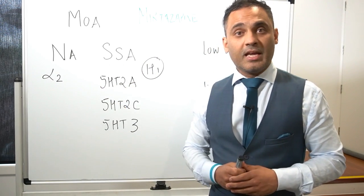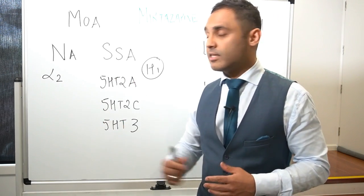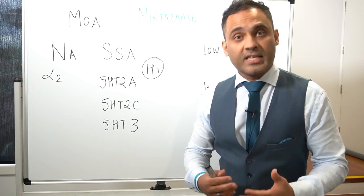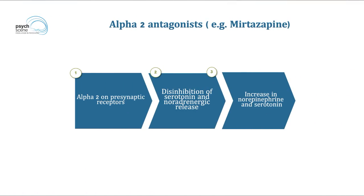So mirtazapine releases noradrenaline in the prefrontal cortex by antagonizing the alpha-2 presynaptic autoreceptor. You get release of norepinephrine from the locus coeruleus.